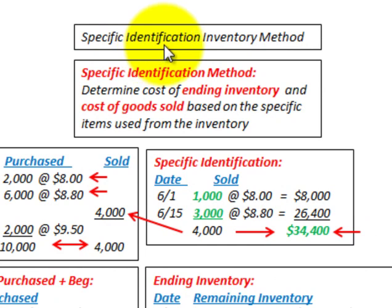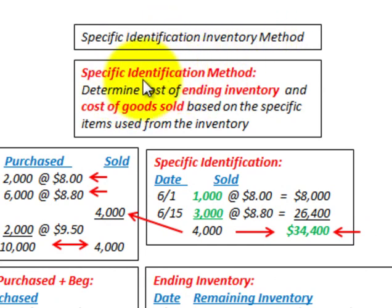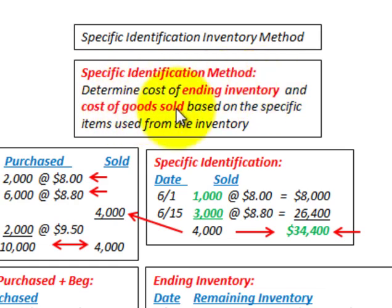Here we're going to be looking at the specific identification inventory method. This is where we identify the specific items in our inventory that we're going to sell, and we determine the cost of the ending inventory and the cost of goods sold based on the specific items used in our inventory.